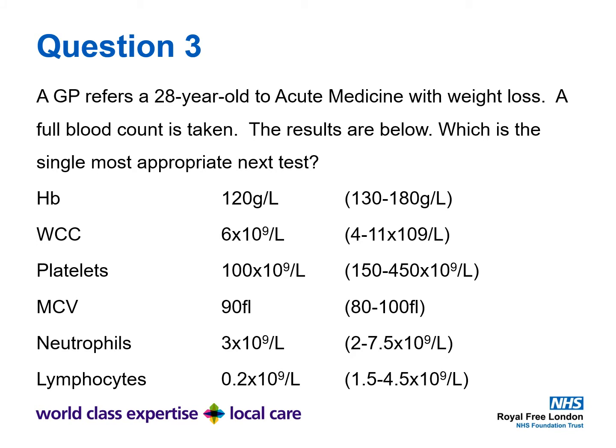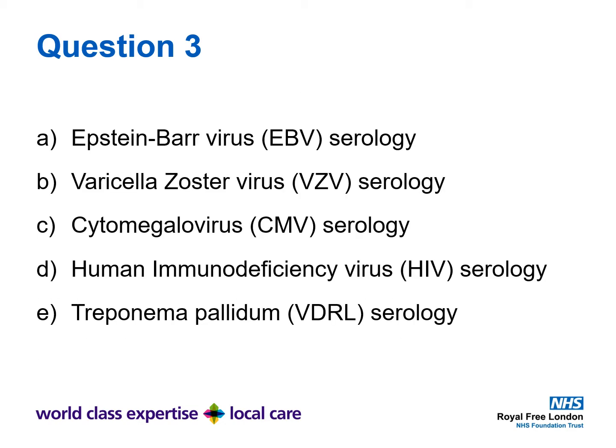Question 3. A GP refers a 28 year old to acute medicine with weight loss. A full blood count is taken. The results are below — Hb 120, white cell count 6, platelets 100, MCV 90, neutrophils 3, lymphocytes 0.2. Which is the single most appropriate next test? A: Epstein-Barr virus serology, B: varicella zoster virus serology, C: cytomegalovirus serology, D: human immunodeficiency virus serology, E: treponema pallidum serology.